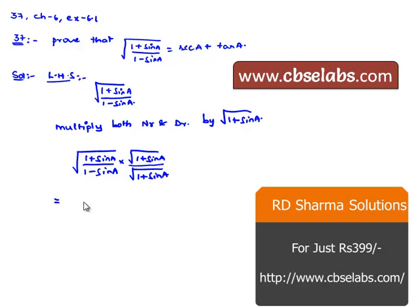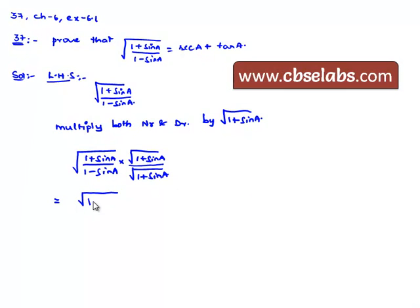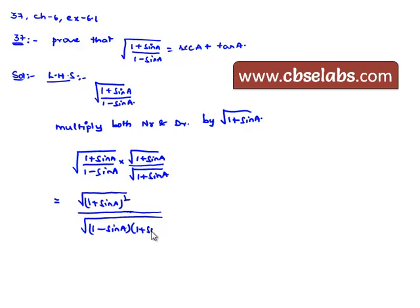That is equal to: in the numerator, we get square root of (1 plus sin A) times square root of (1 plus sin A), which is (1 plus sin A) whole square, divided by square root of (1 minus sin A) times (1 plus sin A), which is nothing but square root of (1 minus sin² A).